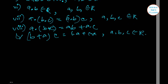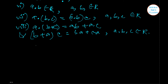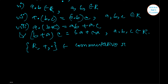Hence, we say that R, which has two binary components — addition and multiplication — is said to be a commutative ring, provided that the multiplication is also commutative.